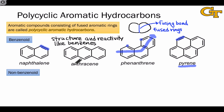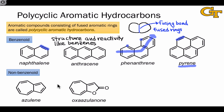The non-benzenoid polycyclic aromatic hydrocarbons consist of ring sizes different than six. Two examples are shown here. Azulene is a constitutional isomer of naphthalene, and just like naphthalene, the molecule has 10 pi electrons, indicating that it's aromatic. However, this molecule isn't as simple as it looks, as we'll see in a moment.